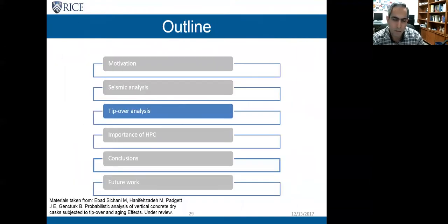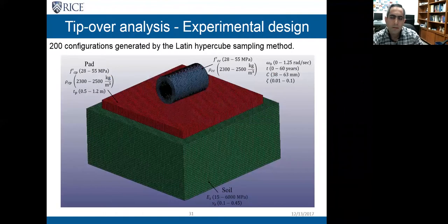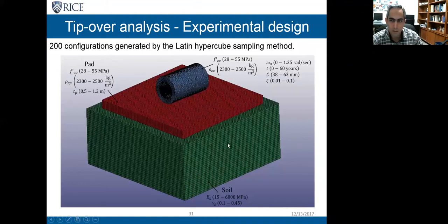This wraps up my seismic analysis part, and now I move to the tip-over analysis. The tip-over analysis follows the same five steps: experimental design, finite element analysis, metamodeling, fragility analysis, and risk estimation. I want to study the structural response of the cask when it falls down and hits its foundation. The motion starts at the critical angle of rotation. I chose a fixed geometry for the cask, so geometric parameters do not change, and I focused on material variation in the cask, foundation, and soil. The only geometric parameter that changes is the thickness of the pad.